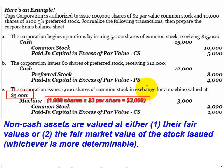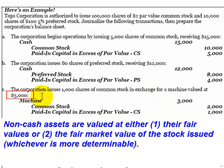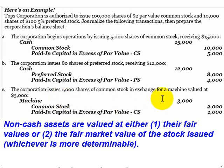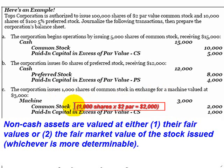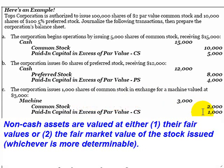That happens to also be the fair market value of the machine, so in this case we don't have an issue. But if the fair market value estimate for the machine differed from the fair market value estimate for the stock, we should use whichever number is more reliable to cost out the new asset. We'll debit the machine account for $3,000. The credit to common stock, as always, goes for par value — $2 times 1,000 shares gives us the $2,000 credit. The remaining $1,000 credit goes into the paid-in capital in excess of par value account.